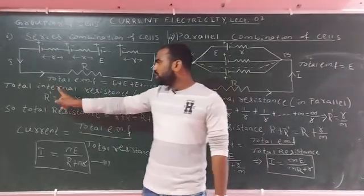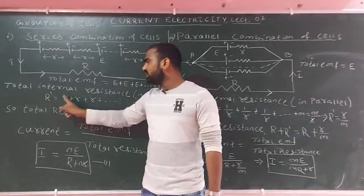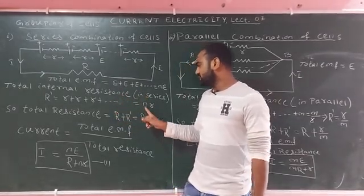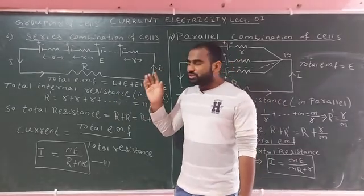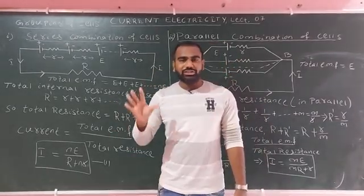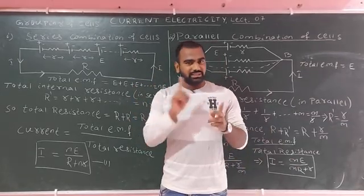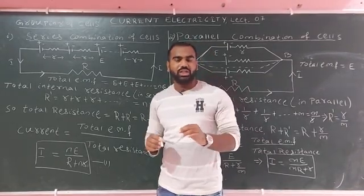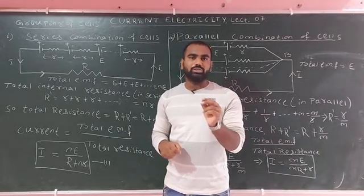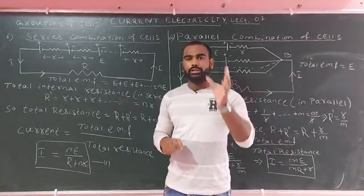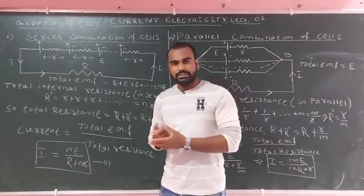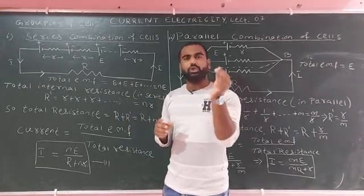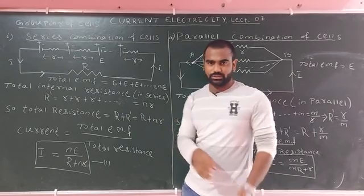For n number of cells in series, the total internal resistance R prime equals R plus R plus R, up to n terms, so total internal resistance equals nR. For example, if each cell has internal resistance 2 ohm and we have 5 cells, total internal resistance is 5 × 2 = 10 ohm. So for n cells in series, total internal resistance is nR, simple multiplication.